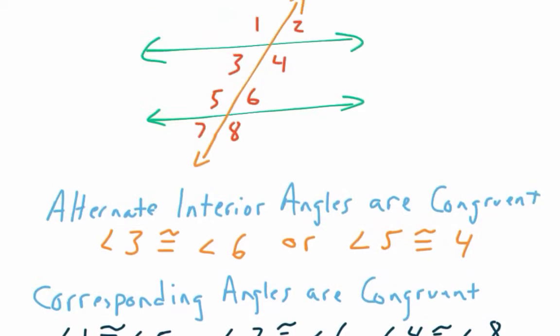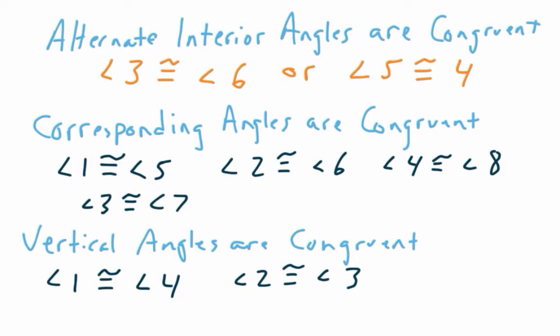So angle two is congruent to angle three. So you have two more pairs. Five and eight, six and seven. We all agree? Okay. So then angle five is congruent to angle eight. And then angle six is congruent to angle seven. I had to squeeze in the amount of space on my page. Everybody have it copied down?